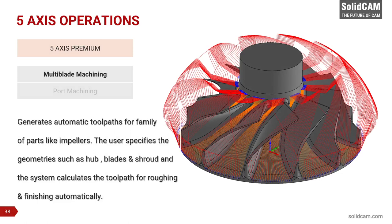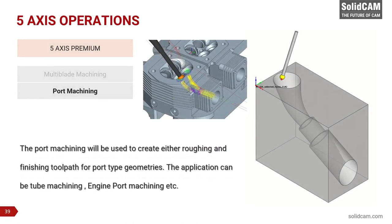Next is the 5-axis premium bundle, which includes two additional specialized and very complex operation types. Multi-blade Machining is designed specifically for parts such as impellers. The user specifies geometries such as hub, blades, and shroud, and the system automatically calculates toolpaths for both roughing and finishing — a very specific and highly sophisticated machining strategy. Port Machining is used to create roughing and finishing toolpaths for port-type geometries, such as tube machining or engine port machining.